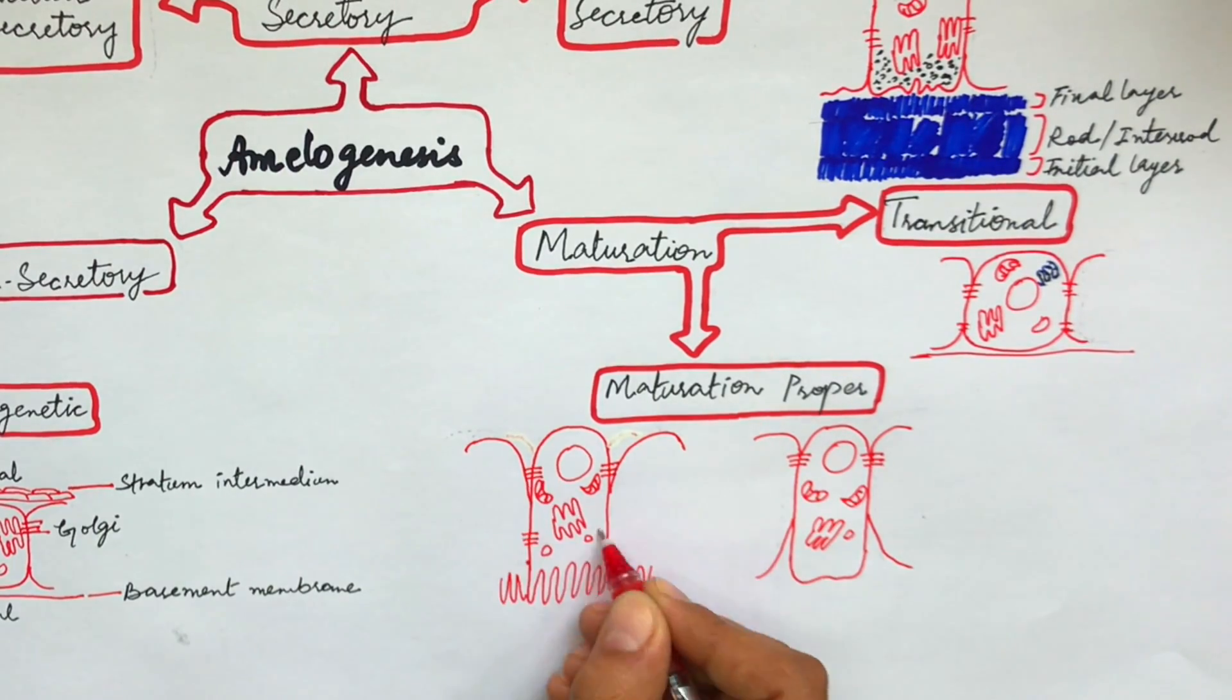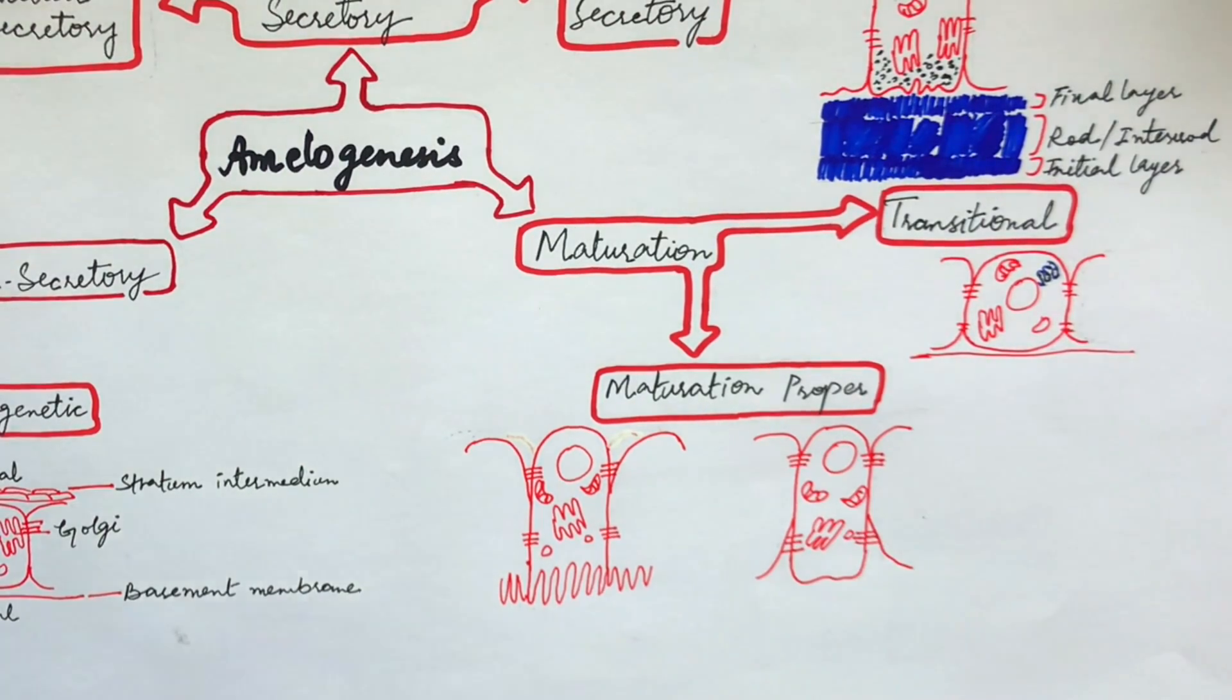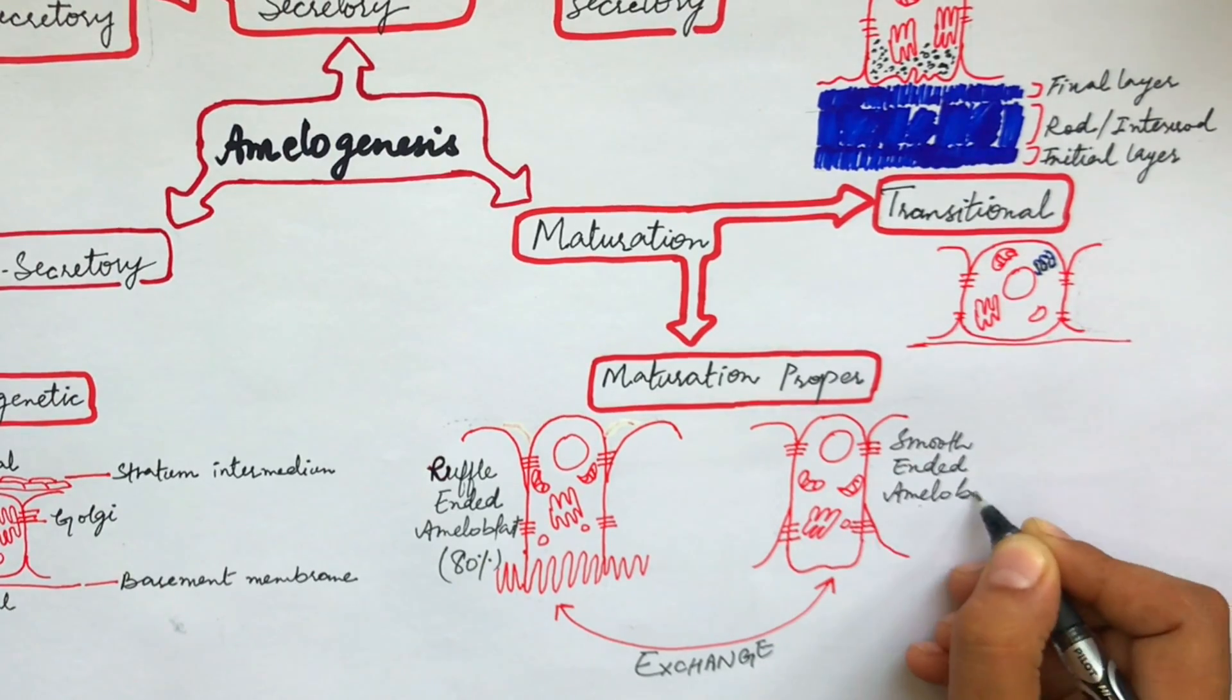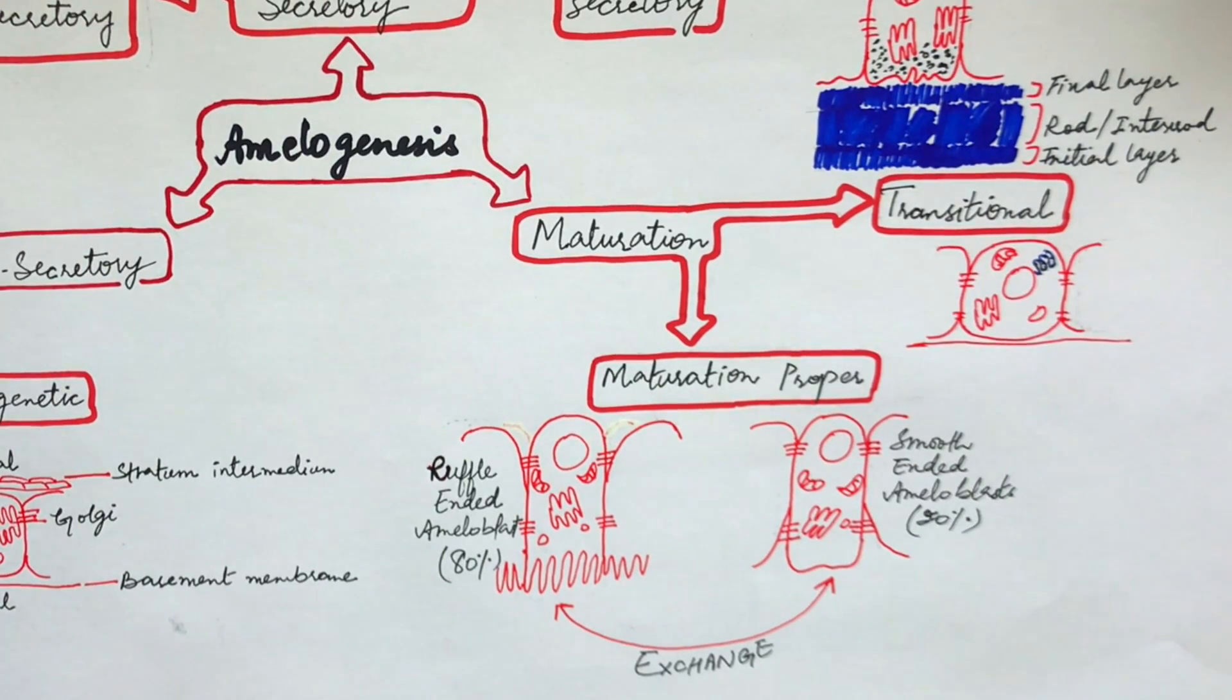In modulation, the ameloblast shows cyclic alteration between ruffle-ended and smooth-ended ameloblasts facing the enamel matrix. The cell spends 80% of its time in the form of the ruffle-ended ameloblasts.